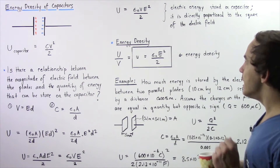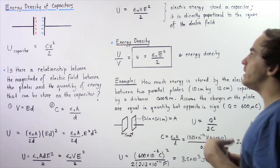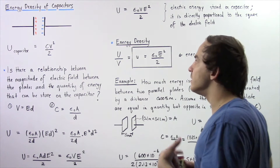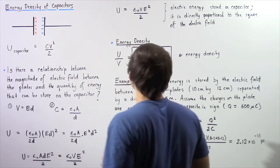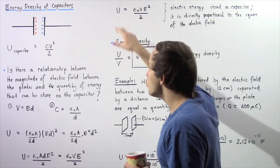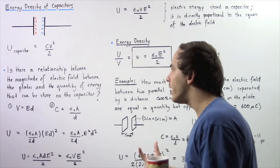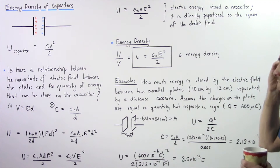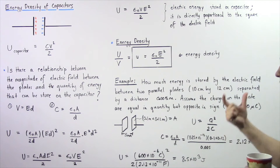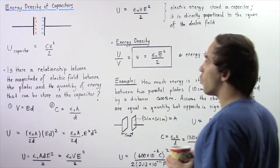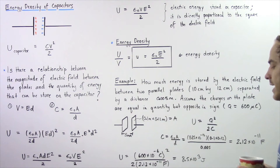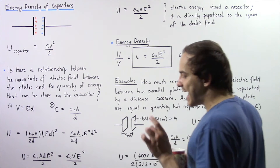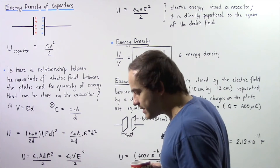This means that if we double the electric field between our two plates, we quadruple the quantity of electric energy that can be stored within our parallel plate capacitor. Now let's define something known as energy density.